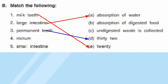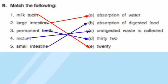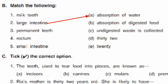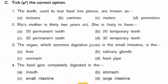Rectum — undigested waste is collected there. Small intestine — absorption of digested food. Write down the answers.